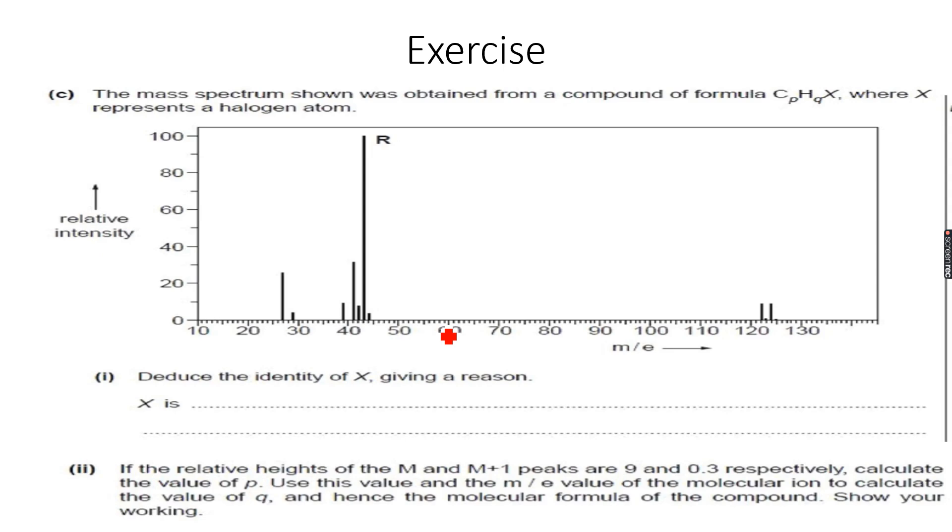We have a mass spectrum here. This is what a mass spectrum looks like. This is the relative intensity or relative abundance. This is m/e or m/z—whatever you like to call it, it's the same thing. The question says